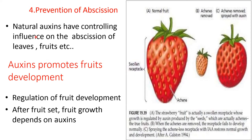Prevention of abscission: natural auxin has a controlling influence on abscission of leaves, fruits, etc. Auxin promotes fruit development. After fruit set, fruit growth depends on auxin. The strawberry fruit is a swollen receptacle whose growth is regulated by auxin produced by the seeds (the true fruit). When the achenes are removed, the receptacle fails to develop normally. Spraying the acheneless receptacle with IAA restores normal growth and development.